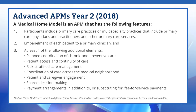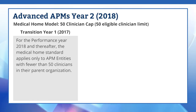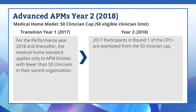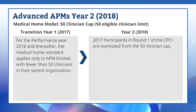Medical home models are subject to different and more flexible standards in order to meet the financial risk criterion to become an Advanced APM. Previous rulemaking stated that beginning in performance year 2018 and thereafter, the medical home financial risk standard would only apply to APM entities and Advanced APMs with fewer than 50 clinicians in their parent organization. Specifically, 2017 participants in Round 1 of the Comprehensive Primary Care Plus Model, or CPC+, are exempted from the requirement that the Medical Home Model Financial Risk Standard applies only to APM entities with fewer than 50 clinicians in their parent organization.